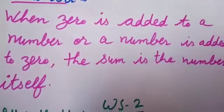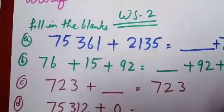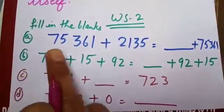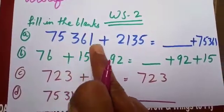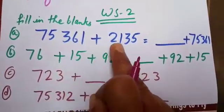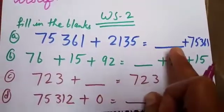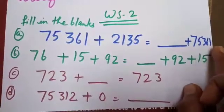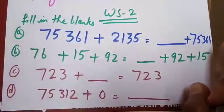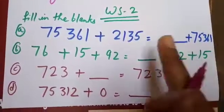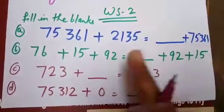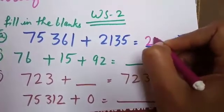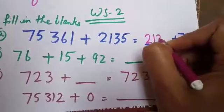Let us start worksheet number 2 — filling in the blanks. Part A: 75361 plus 2135 is equal to dash plus 75361. We know that when we change the order of the addends, the sum remains the same. So I will write here 2135.